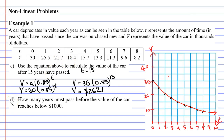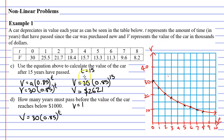Let's now move on to Question D. It says: how many years must pass before the value of the car reaches below $1,000? We use the same equation: V equals 30 times 0.85 to the power of T. This time we don't know T, but we want to find when the value reaches $1,000. Since V is in thousands of dollars, $1,000 means V equals 1, so we substitute 1 in place of V.